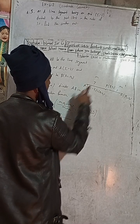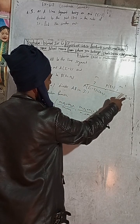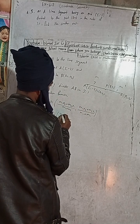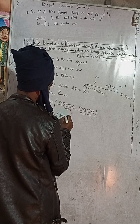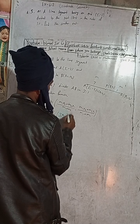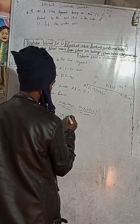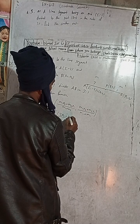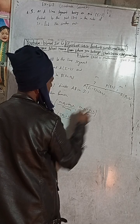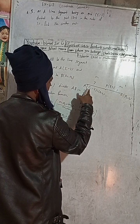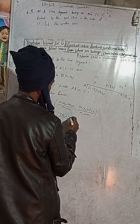So M1 is 3, and into x2 is 3·x2, plus M2 which is 1, and x1 is 5, so 1 into 5. This gives us 3·x2 + 5 in the numerator for the x-coordinate.